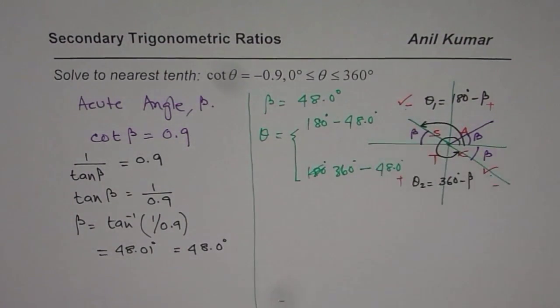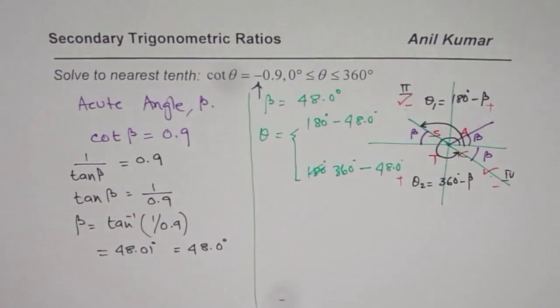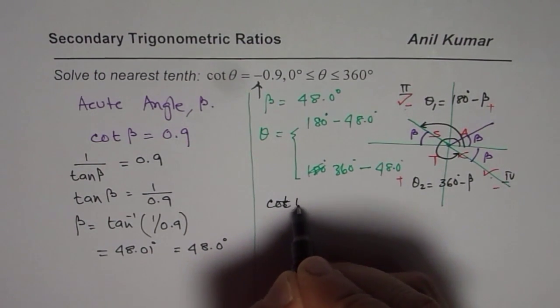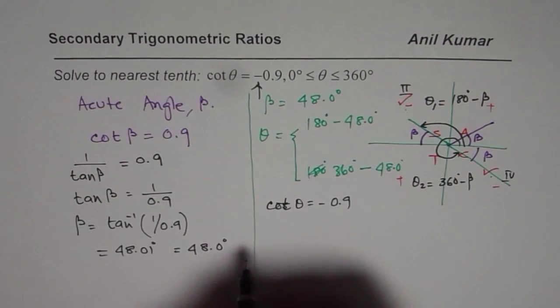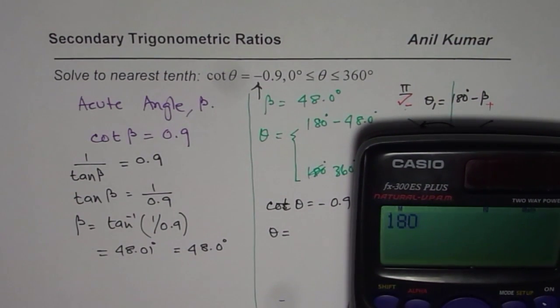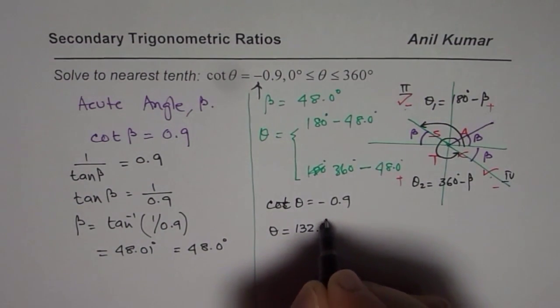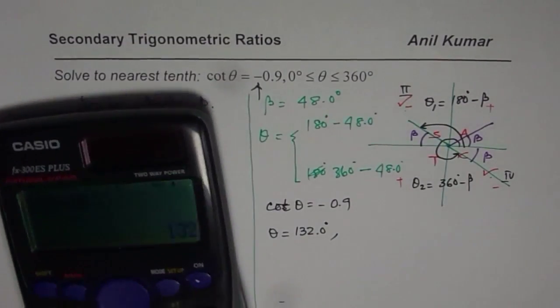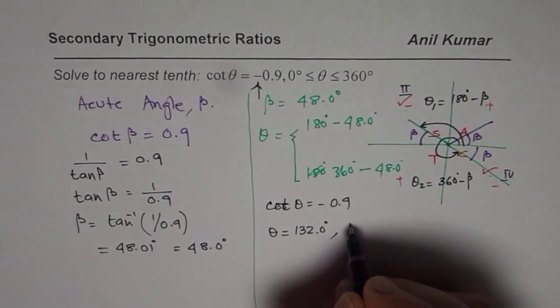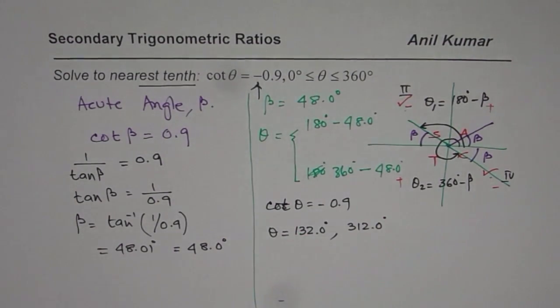Since in quadrant 2 and in quadrant 4, we are expecting a negative answer, we are looking for a negative answer. Do you get the point? So we can now find and write down our answer that cot θ equals to minus 0.9 means θ is equals to, use the calculator, 180 minus 48 equals to 132.0 degrees. Or we will do 360 degrees minus 48 equals to 312.0 degrees. Write with one decimal place since we need to write to the nearest tenth.